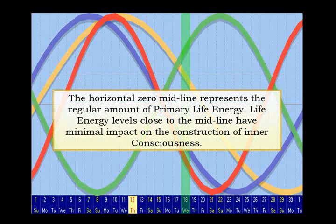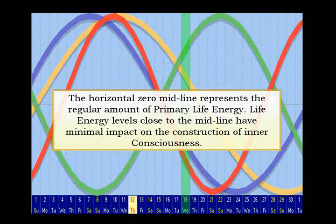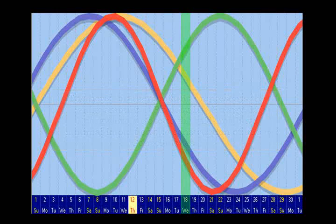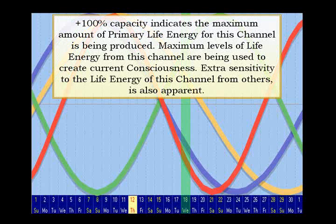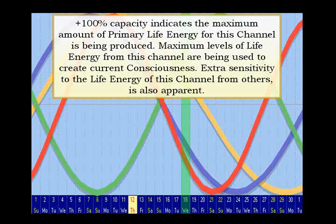The horizontal zero midline represents the regular amount of primary life energy. Life energy levels close to the midline have minimal impact on the construction of inner consciousness. Positive 100% capacity indicates the maximum amount of primary life energy for this channel is being produced. Maximum levels of life energy from this channel are being used to create current consciousness. Sensitivity to the life energy of this channel from others is also apparent.